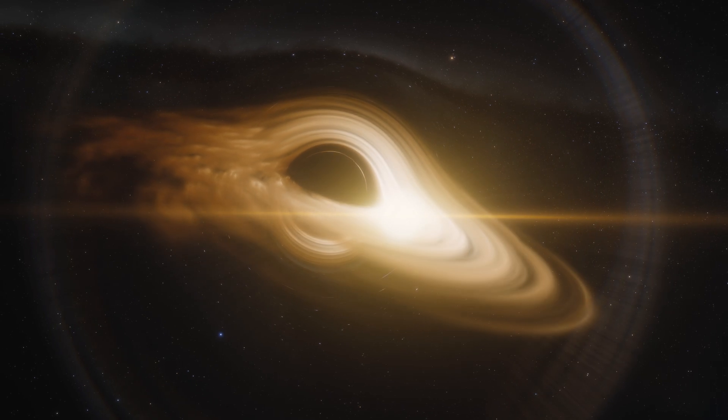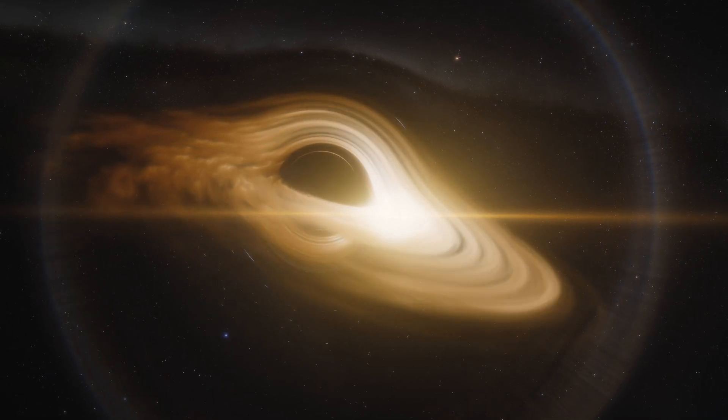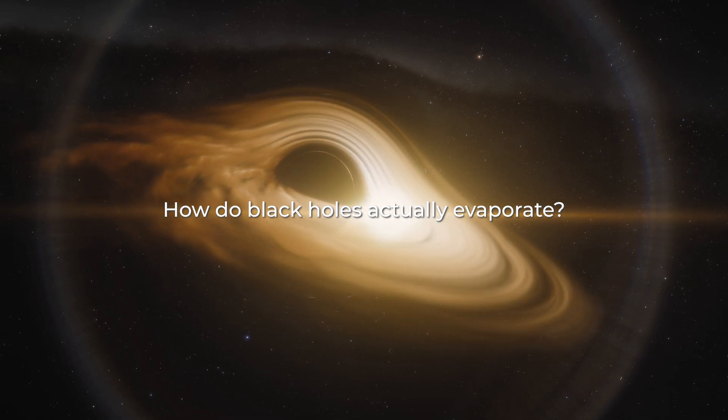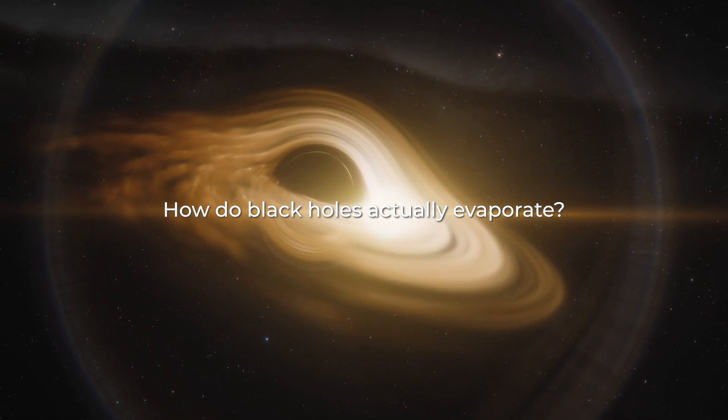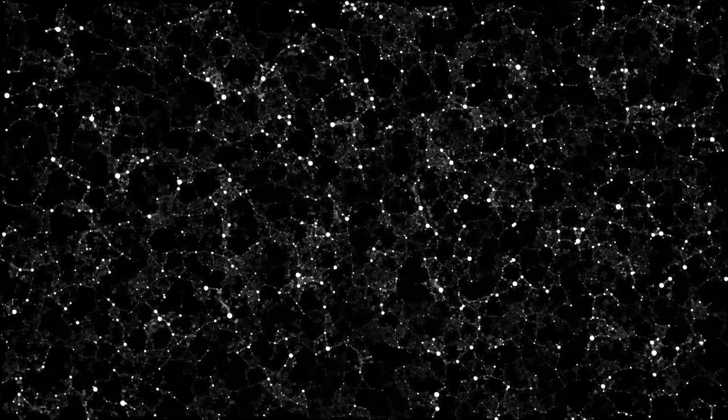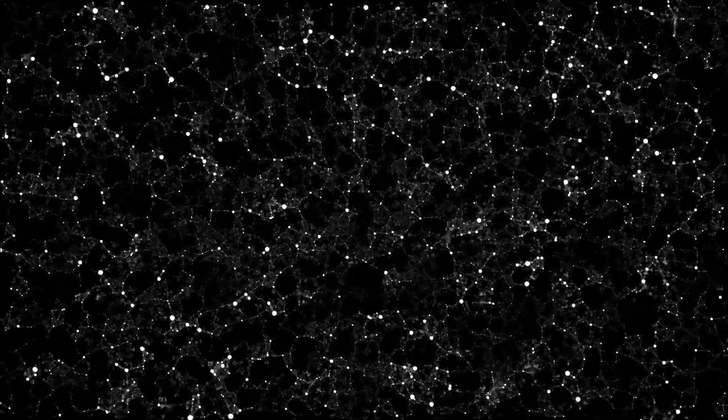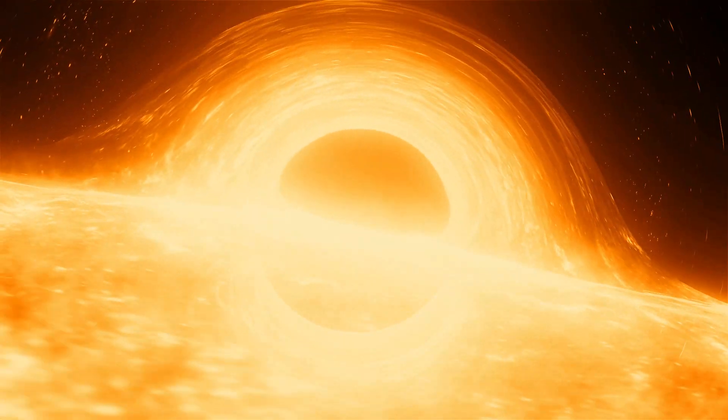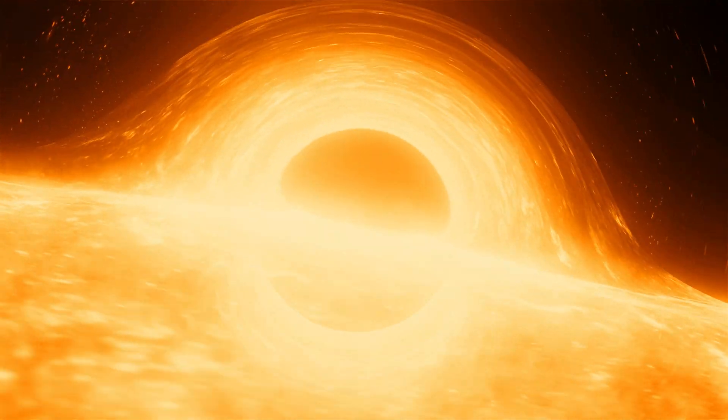Each particle takes a bit of energy with it. Quantum fluctuations don't occur spontaneously—creating particle-antiparticle pairs requires energy. This energy is borrowed from the black hole's gravitational field, reducing its mass.